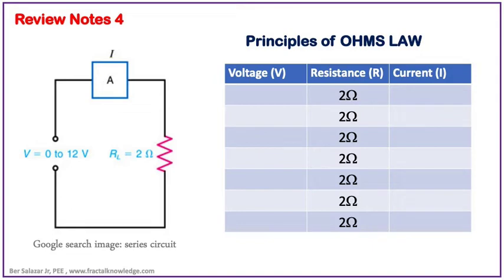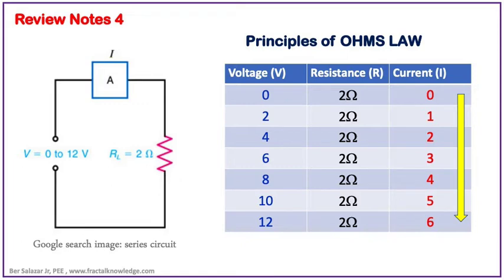Let's prove the principles of Ohm's Law. We have a circuit as you can see from the figure on your screen — a 0 to 12 volts source and a fixed load resistance of 2 ohms. What you need to do is vary the voltage and see the result. We vary the voltage from 0, 2, 4, 6, 8, 10, and 12 volts. Using the formula of Ohm's Law, we can see the resulting currents — the current increases as the voltage increases in direct proportionality.